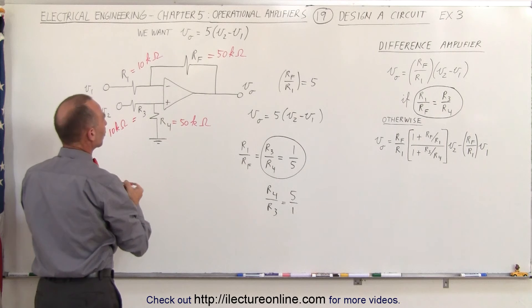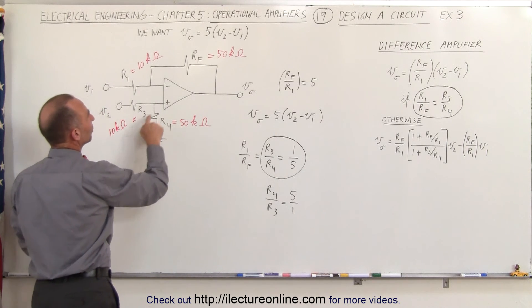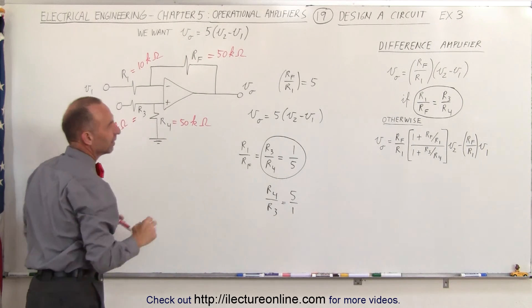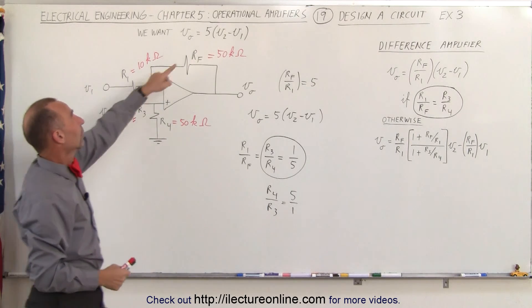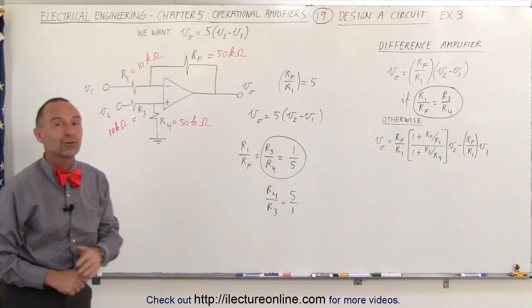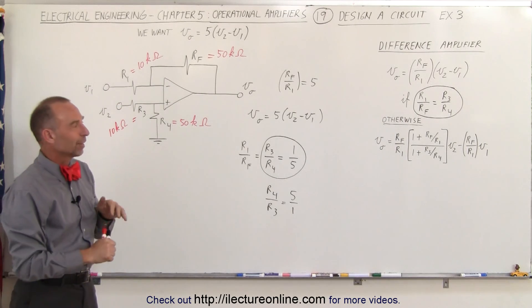And you can then see that the ratio of R4 to R3 is equal to the ratio of Rf to R1, simply by inversing those two fractions. And that will then give us the output of 5 times the difference between V2 and V1. That's how it's done.